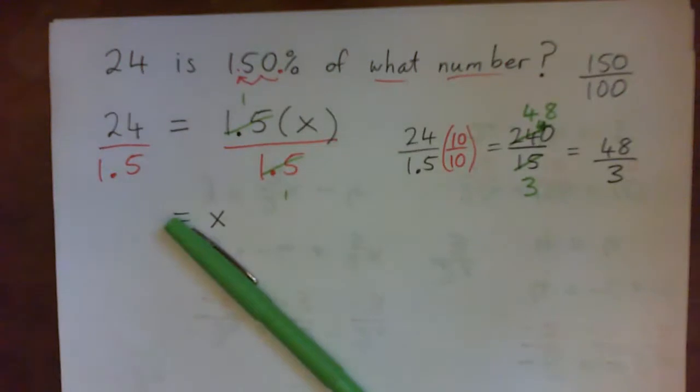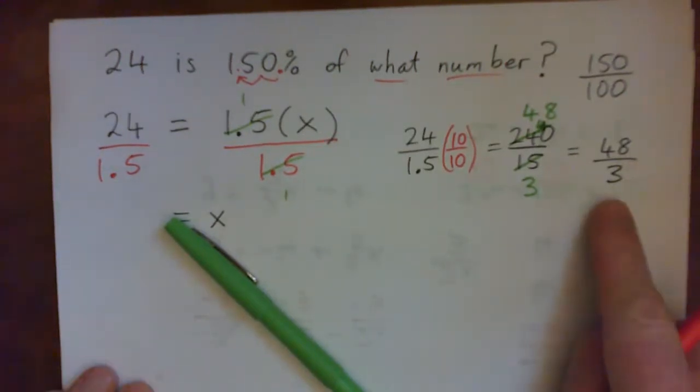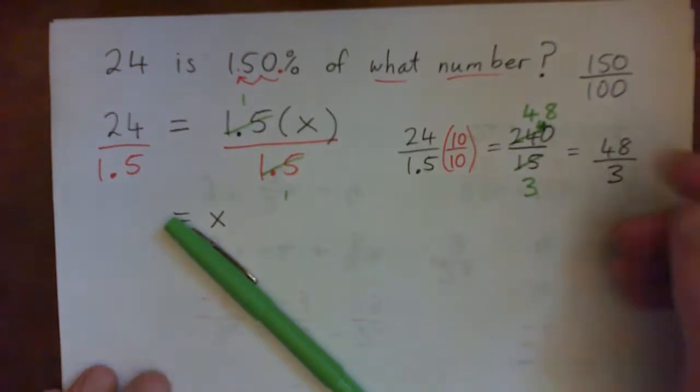So you have 48 over 3. And you can simplify that also. Can you press pause on the video and simplify this? I hope you pressed pause and tried it.